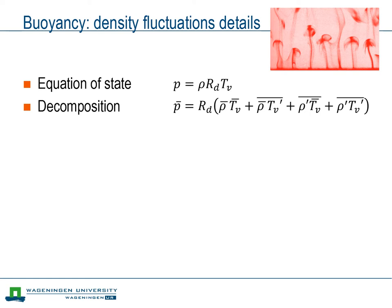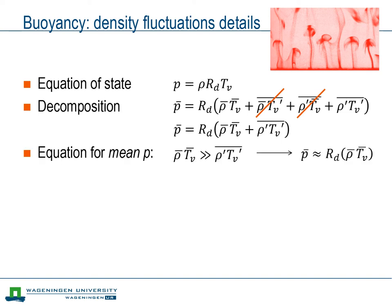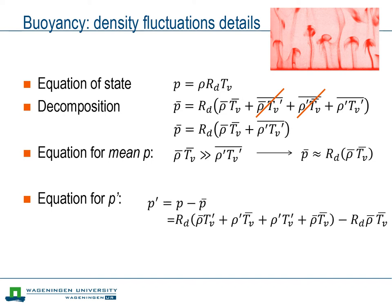This yields four terms. Of those four terms, two terms vanish because the mean of the fluctuations is zero. Hence we are left with two terms. Of those, the second term can be neglected, and as a result we obtain an expression for the mean pressure — the equation of state for the mean flow. Now we can obtain an expression for the pressure fluctuations by subtracting the mean equation of state from the full equation of state. The third term turns out to be small, and the last term is cancelled by the mean equation of state. As a result, we can express the relative pressure fluctuations in terms of relative fluctuations in virtual temperature and density.